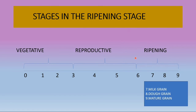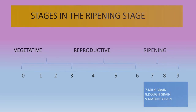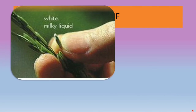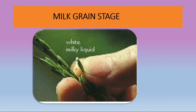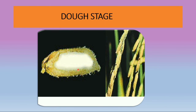The ripening stage has three sub-stages: milk grain stage, dough grain stage, and mature grain stage. In the milk grain stage, the grain starts to fill with a white milky liquid that can be squeezed out; the top of the panicle bends gently in an arc, and the panicle and the three uppermost leaves are green. In the dough stage, noticeable changes occur — spikelets turn yellow and the remaining leaves dry up, following senescence.